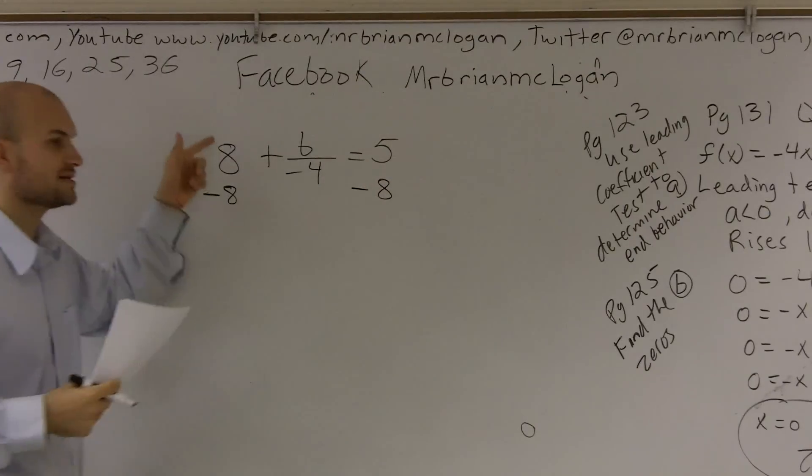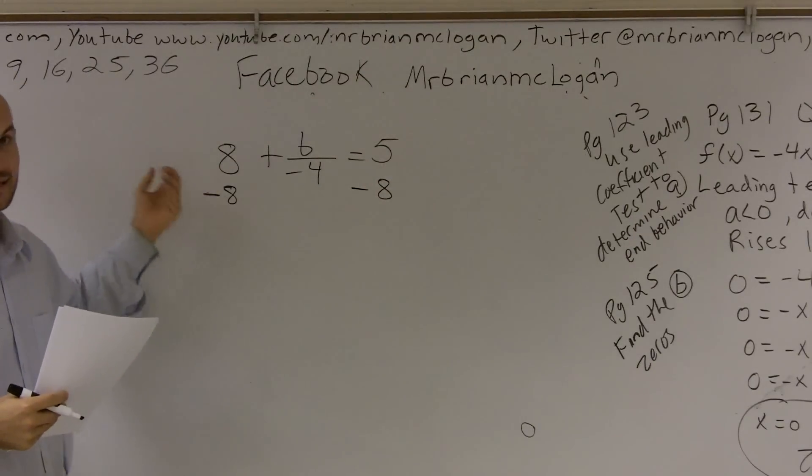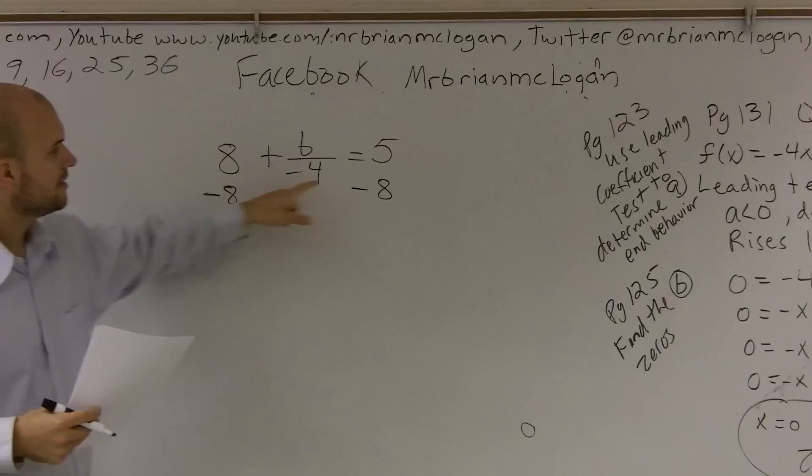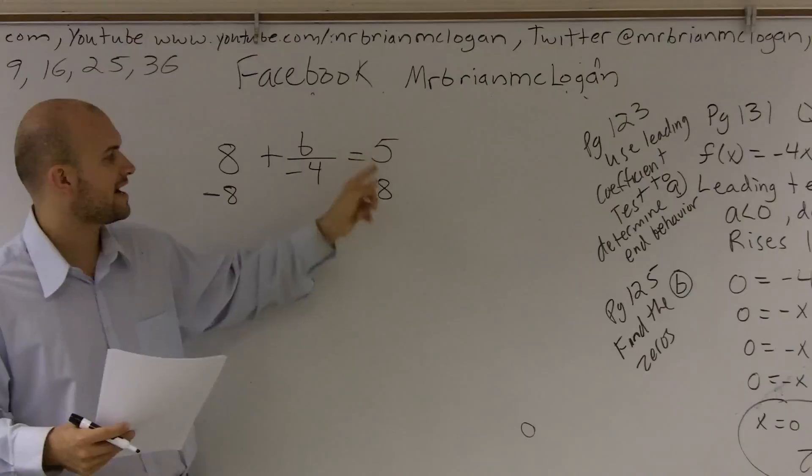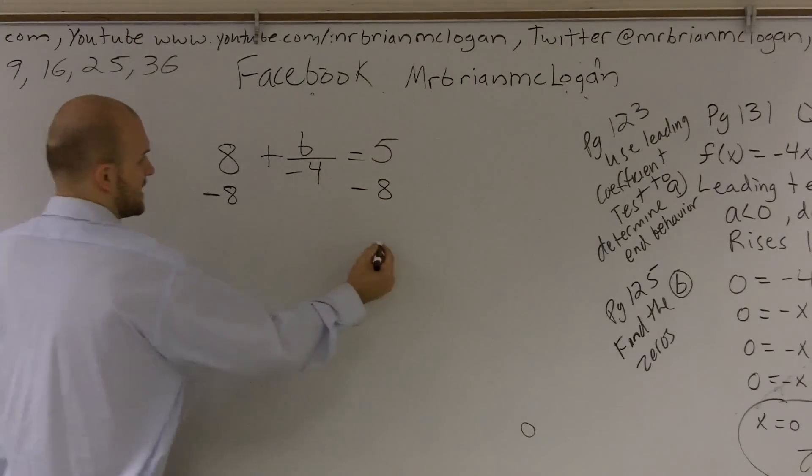The reason why I'm subtracting that 8 is because 8 minus 8 is going to give me 0, and that's good. And whatever you do on the left side of the equation, you have to do on the right side of the equal sign. So 5 minus 8 will give me a negative 3.